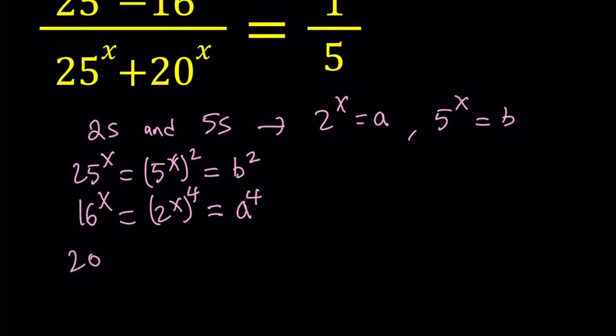And finally, 20 to the power x. Since 20 can be written as 2 squared times 5, we can write it like this. And then when we split it up, 2 to the power x squared and 5 to the power x. 2 to the power x is a, so this becomes a squared times b.